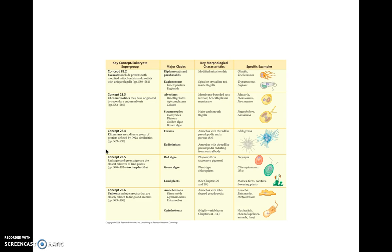The first group is Excavata. There's a chart here that's very helpful for breaking things down — I'd recommend coming back to it throughout the lab to keep things straight. The first group is Excavates or Excavata, then we'll go to Chromoalveolates, Rhizarians, and Unikonts. Then we have Archaeoplastida, which I'll talk about briefly later. These are broken down into subgroups or clades, and then into specific examples.